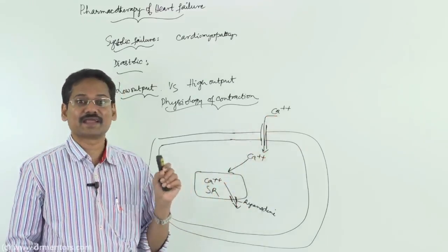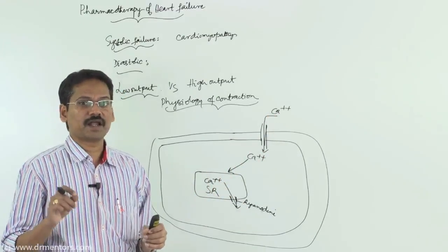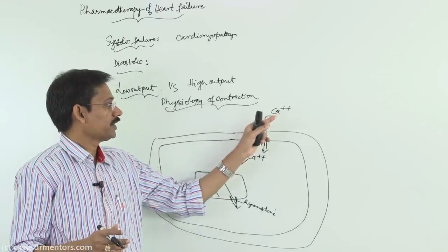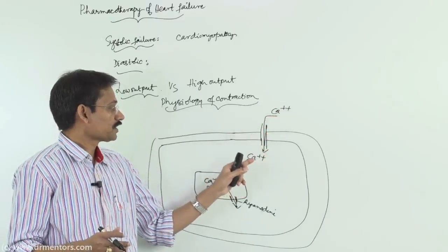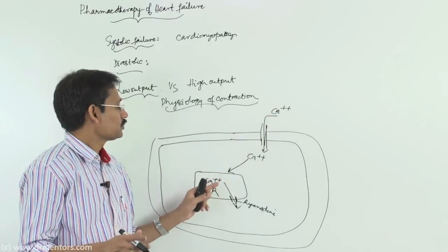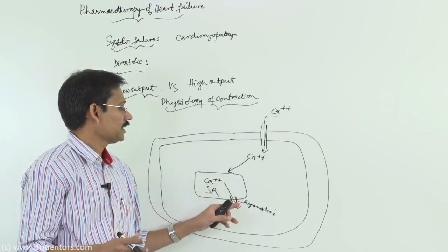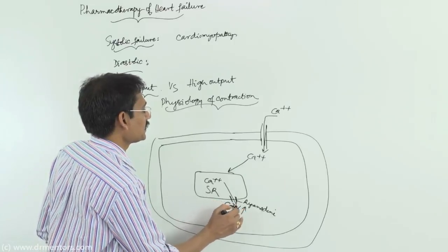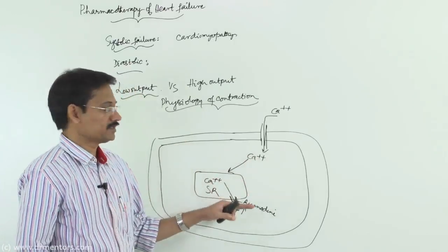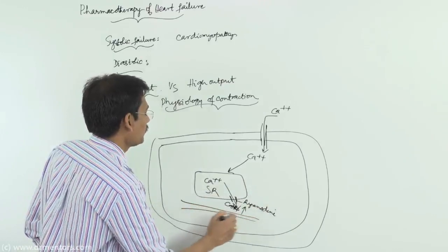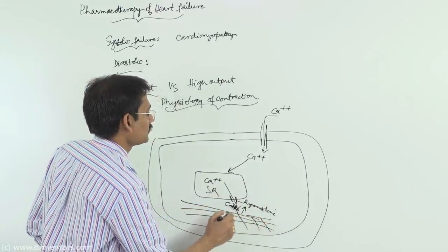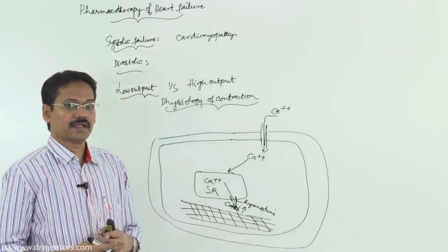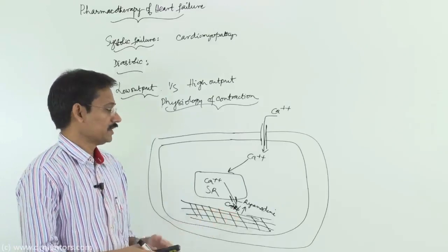Extracellular calcium is known as trigger calcium. For cardiac muscle and vascular smooth muscle contraction, extracellular calcium enters through the calcium channel and stimulates the release of intracellular stored calcium from the sarcoplasmic reticulum into the cytoplasm. The resulting rise in intracytoplasmic calcium levels causes activation of the contractile apparatus — the productive interaction between actin and myosin — ultimately leading to contraction.